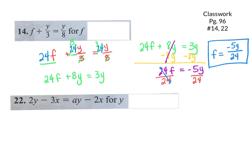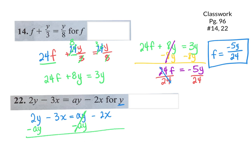For the next one, which variable am I solving for? Just Y. In this case I have X's, Y's, and a little A thrown in there as well. I want to get my Y's to one side and anything that is not a Y to the other. I'm going to move the AY over with subtraction — that cancels on the left side. I'm going to move the 3X over with addition — that cancels on the left side. So on the right side I have 2Y minus AY.